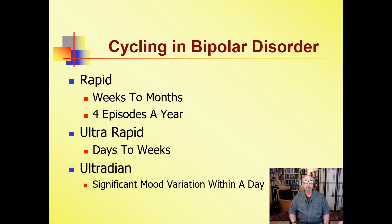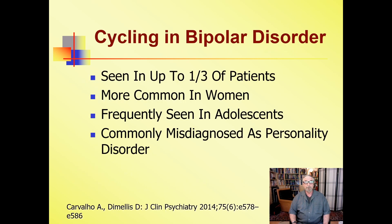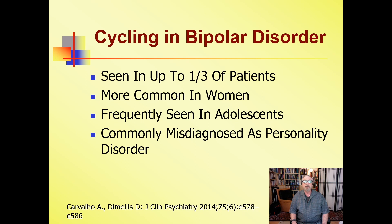You always have to ask whether people have the same symptoms all the time and how quickly they cycle between different mood states. You'll see this in up to a third of patients. It's more common in women, and it's seen a lot more frequently in adolescents. I see a lot of 16-, 17-, 18-year-olds brought to me with highly unstable moods who've been diagnosed with anxiety or depression — it gets missed that they have mood disorders.